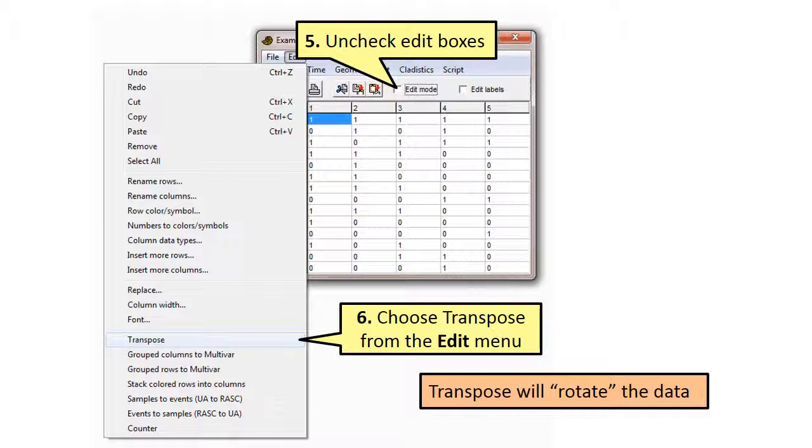The sixth step is to transpose your data. Transposing consists of rotating your data. What were columns are now rows, and the rows become columns. There is a menu item on the edit menu that does the transposing.